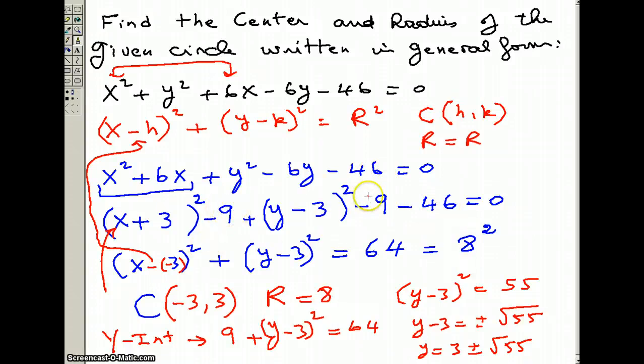Now, we need to move the negative 9, the negative 9, and negative 46 to the right-hand side, and if you add them up, this is negative 9 plus negative 9, negative 18, plus negative 46 would be negative 64. Move it to the right-hand side, becomes 64, which is r squared.